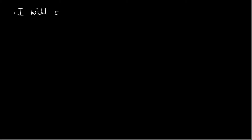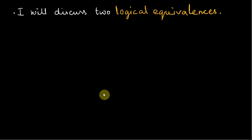In this video, I am going to discuss two logical equivalences and prove their validity with truth tables. Two compound propositions are logically equivalent when they give the same truth value. This means that if we apply the biconditional operator to them, we get a tautology. If you don't know about logical equivalences, you must watch my previous videos — the link is given in the description.